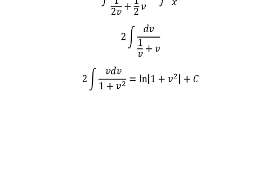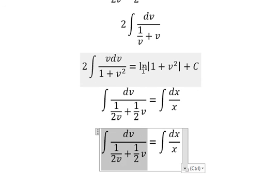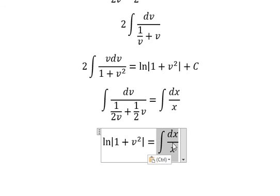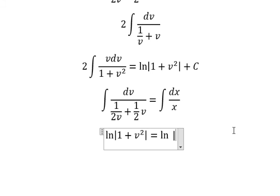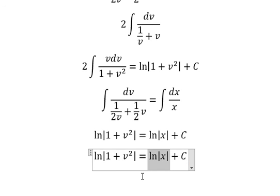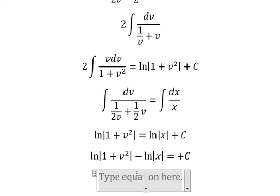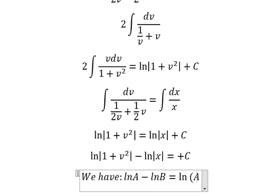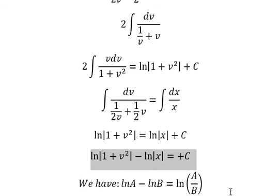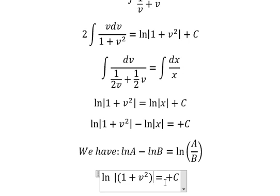We bring the constant c over. The integration on the right gives us the natural log of the absolute value of x, plus c. We move terms to the left and apply the logarithm formula: ln(A) minus ln(B) equals ln(A over B). So we get ln of the absolute value of one plus v squared, over x.